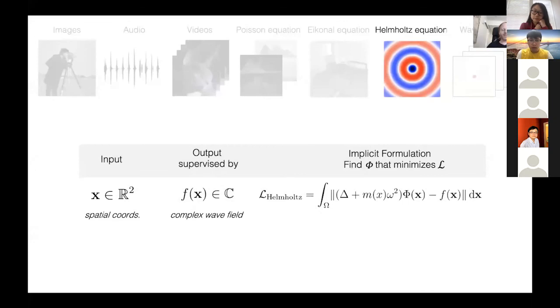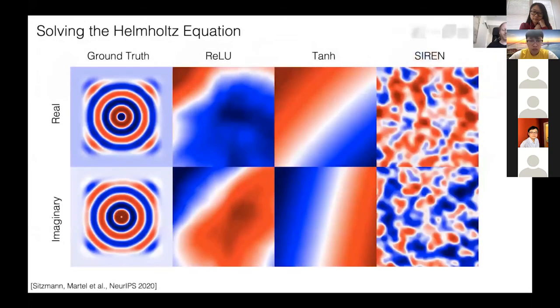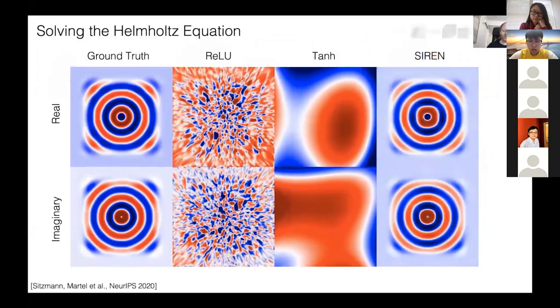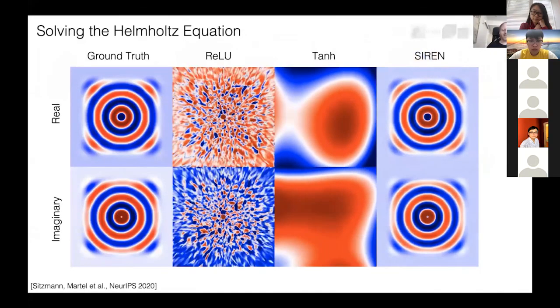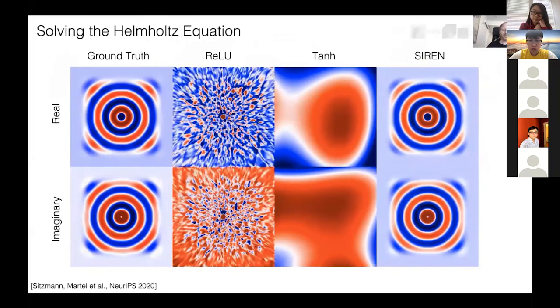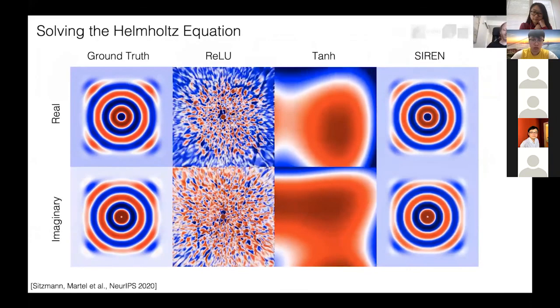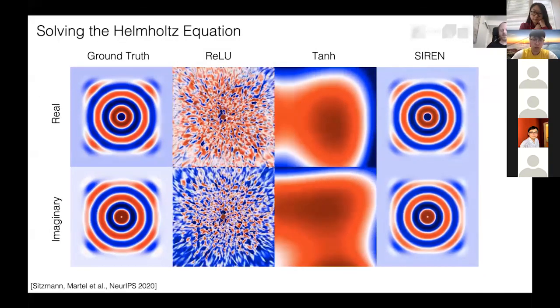One aspect I want to briefly mention is that if you can model the signal and its gradient well, then this also works great for solving physics-based simulation problems. For example, here we're solving the Helmholtz equation on a complex valued field that is constrained by the initial condition only, and immediately the siren fits these signals, whereas other representations like using ReLU or the hyperbolic tangent that people have actually worked on for a while in physics-based simulation just don't work very well.